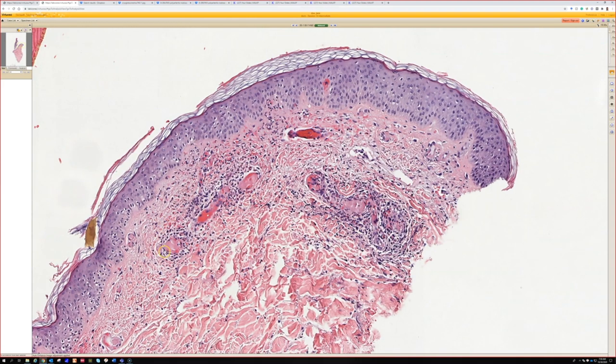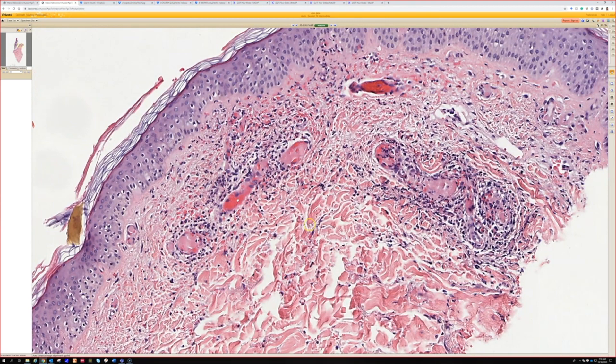So I saw nuclear debris, RBC extravasation, some fibrin deposition, and then expanded vessel wall. So really nice LCV.